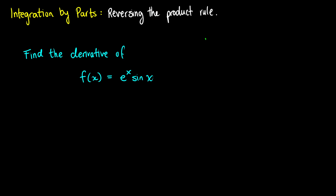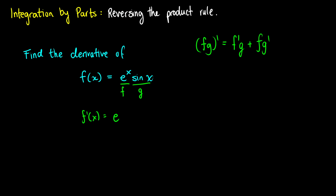If you have two functions f and g and you take the derivative, you take the derivative of f multiplied by g, then you take f and multiply it by the derivative of g. So for e^x · sin(x), e^x is our function f and sin(x) is our function g. To take the derivative: the derivative of e^x is e^x, times g which is sin(x), then add e^x times the derivative of g, which is cos(x).